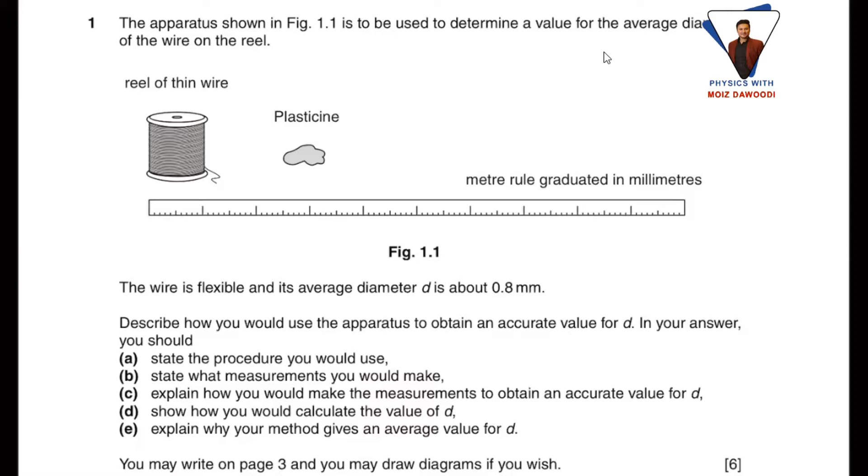If you can see in this question, the examiner is saying the apparatus shown in Figure 1.1—that means a reel of thin wire, plasticine, and meter rule graduated in millimeters—is used to determine the value of average diameter of the wire on the reel. The wire is flexible and it has an average diameter of 0.8 millimeters.